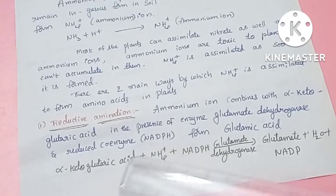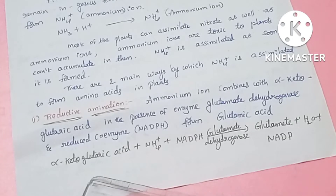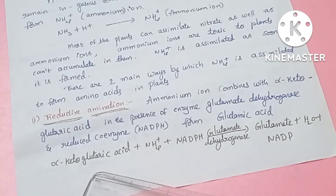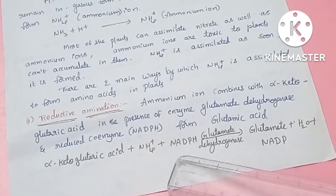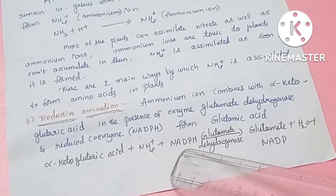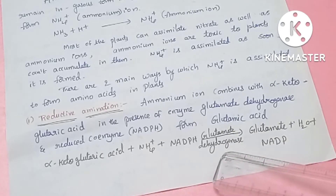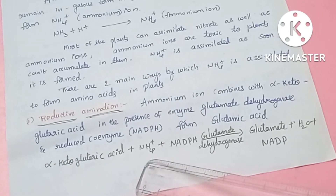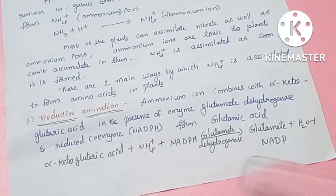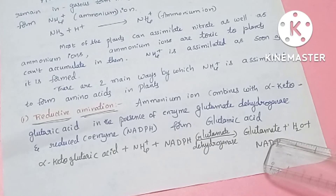The first process is reductive amination. Ammonium ion combines with alpha-ketoglutaric acid in the presence of the enzyme glutamate dehydrogenase and the coenzyme NADPH. This ammonium ion combines with alpha-ketoglutaric acid and forms glutamate, or glutamic acid. This is the first step.